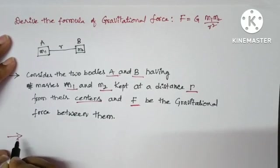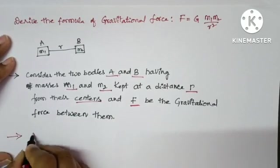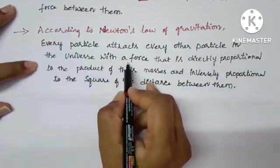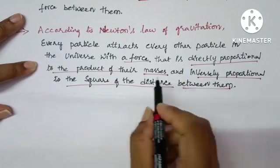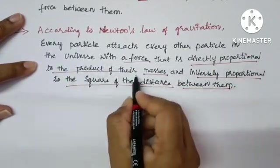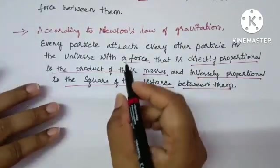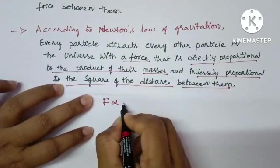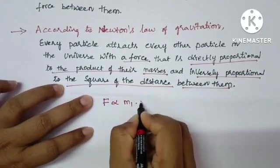According to Newton's law of gravitation, every particle attracts every other particle in the universe with a force. Here two parts are there. First one: the force is directly proportional to the product of their masses. So force is directly proportional to the product of their masses.